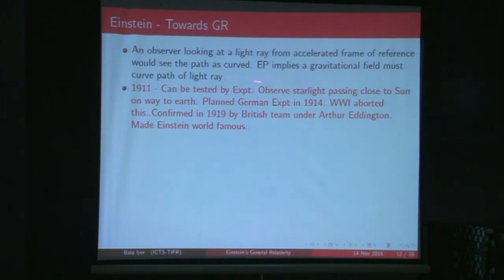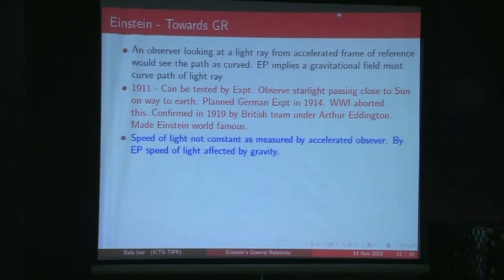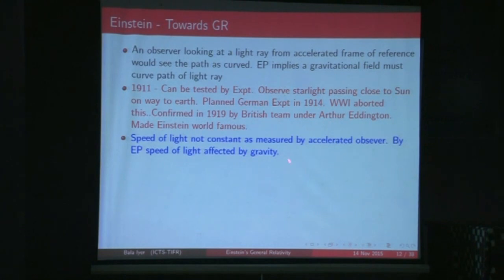As early as 1911, Einstein predicted this as an important fact that a new theory of gravity would verify experimentally. He said it could be tested by observing starlight passing close to the sun. An experiment was planned for 1914, but the World War caused it to be aborted. It was only in 1919 that a British team under Arthur Eddington verified this experiment and made Einstein the icon he is today. He also noted that the speed of light as measured by an accelerated observer is not constant, implying gravity affects the speed of light.